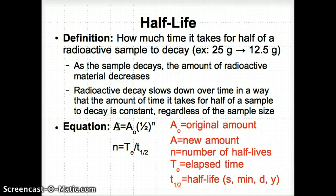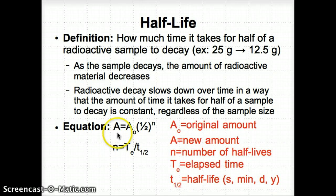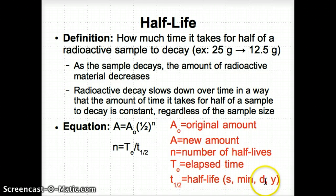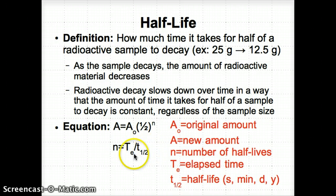Now, in order to find out how many half-lives have passed, we first need to use this equation: N equals the actual amount of time that's elapsed divided by the actual half-life. The half-life is usually in seconds, minutes, days, or years. So you divide whatever the time is by the actual half-life to see how many half-lives have actually passed.